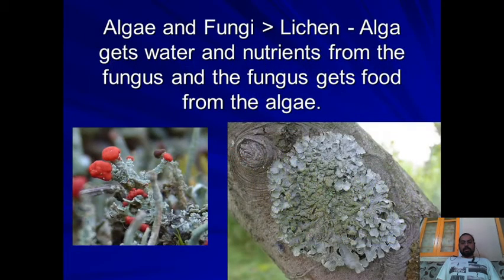There is one very good example of algae and fungi which together become a lichen. The algae get water and nutrients from the fungus, and the fungus gets food from the algae through photosynthesis.